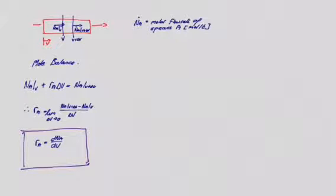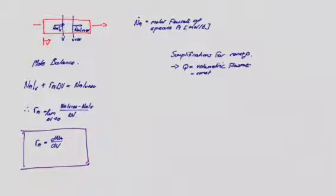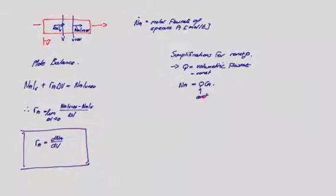Now we look at the simplification for constant density. If the system has constant density, that's equivalent to the volumetric flow rate Q being constant — the volumetric flow rate entering the reactor is the same throughout. The relationship between concentration and molar flow rate is that N_A equals Q times C_A, where Q is volume per time and C_A is moles per liter, giving the correct units of moles per time.